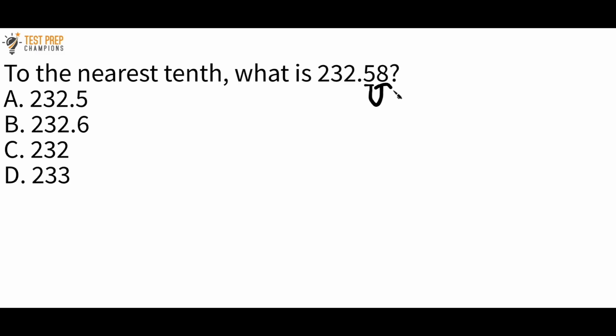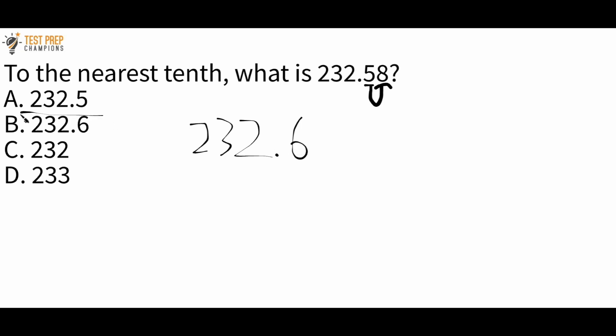Remember: if the number is 5 or greater we round up, and if less than 5 we round down. Here we have an 8, which is greater than 5, so we round up. Leave 232 exactly as it is and take this 5 and bump it up to a 6. The correct answer is B, 232.6.